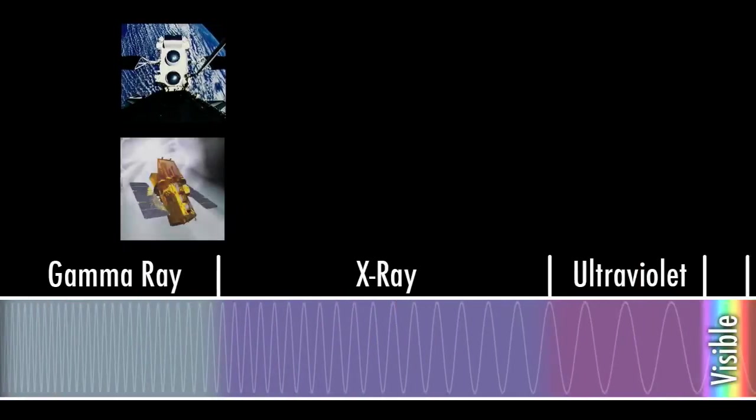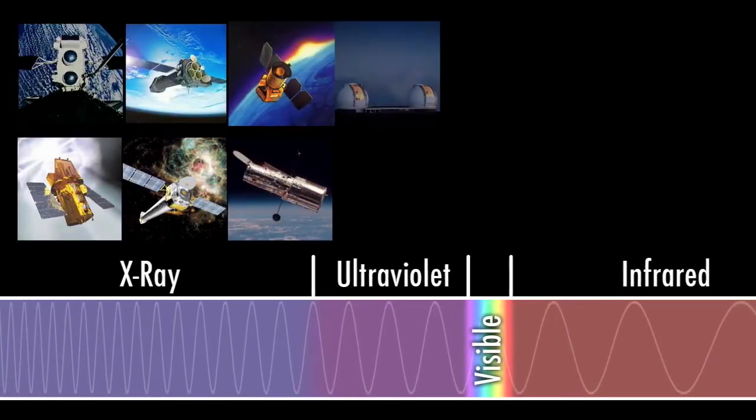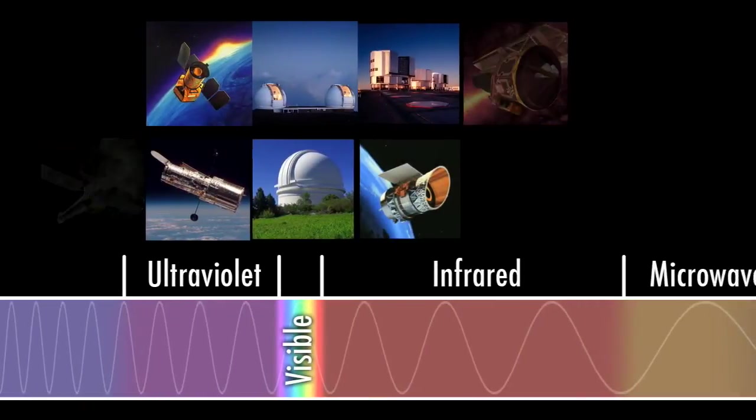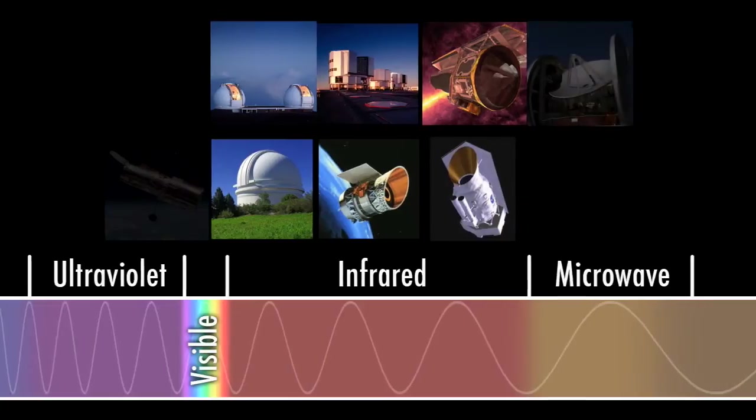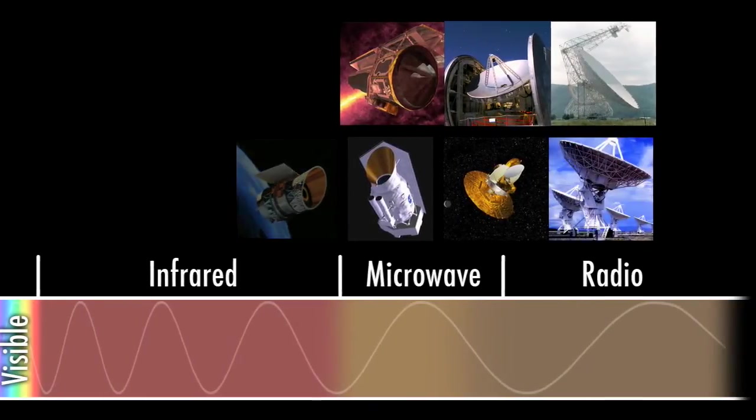In 400 years, technology has advanced almost as much as our understanding. Today, astronomers routinely scan the skies with spectacular telescopes, many of them seeing kinds of light that Galileo didn't even know existed.